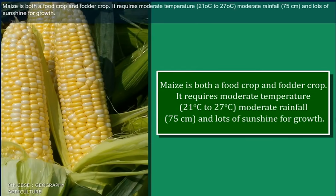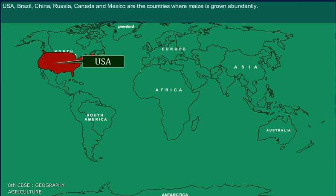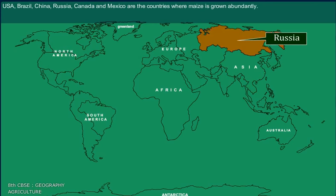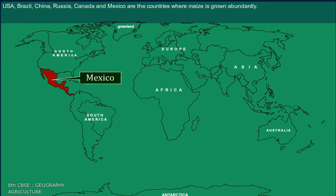Maize is both a food crop and a fodder crop. It requires moderate temperature of 21 to 27 degrees Celsius, moderate rainfall of 75 cm, and lots of sunshine for growth. USA, Brazil, China, Russia, Canada, and Mexico are the countries where maize is grown abundantly.